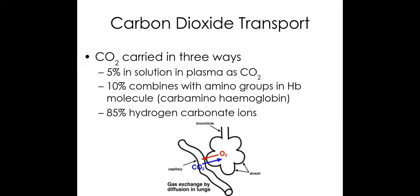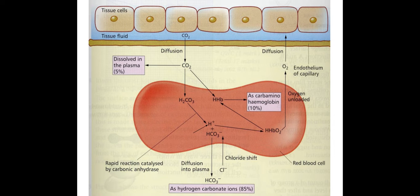We have 10% combining with haemoglobin to form carbamimohaemoglobin — you need to know that terminology. The majority, 85%, forms hydrocarbonate ions, and you need to know how hydrocarbonate ions are formed and be able to describe it in quite a lot of detail. This is the process by which hydrocarbonate ions are actually formed — it's worth covering it up and writing it out to try to recall as much as possible.